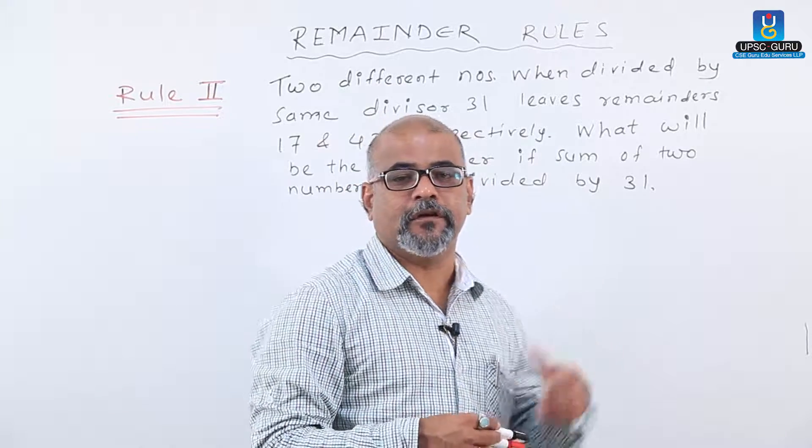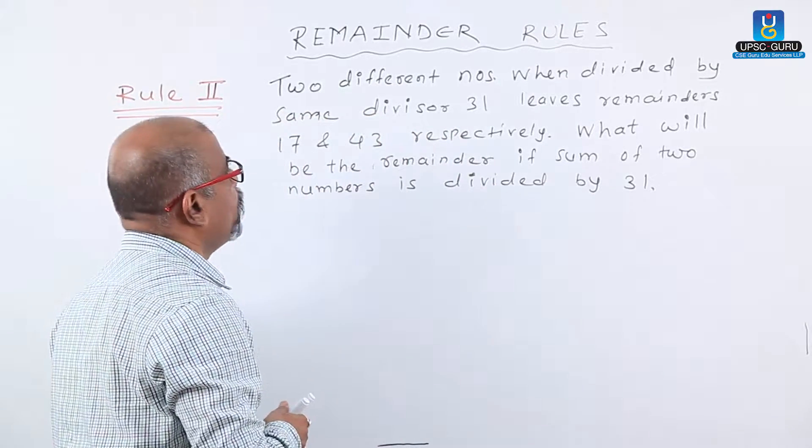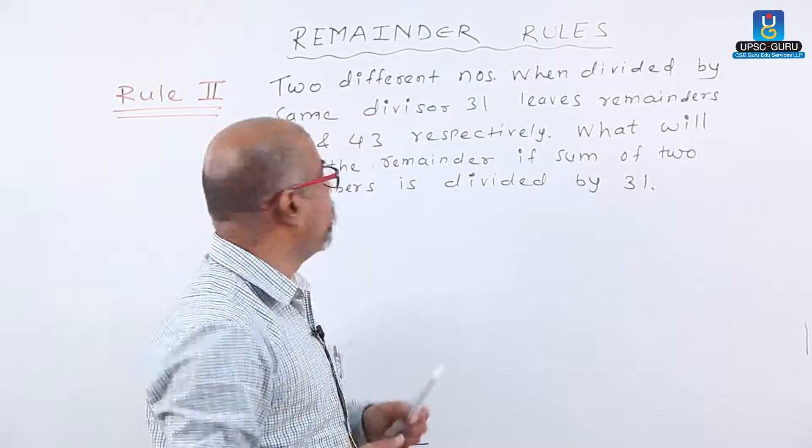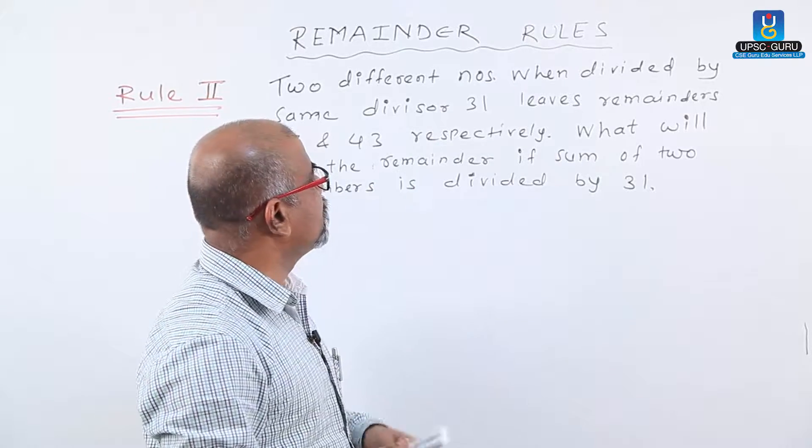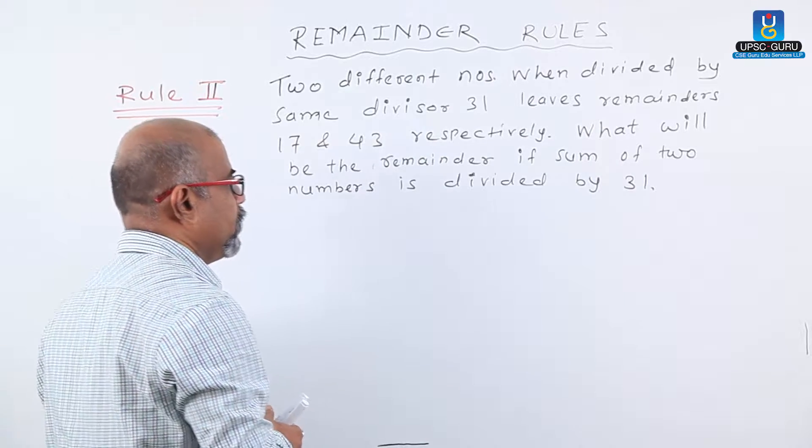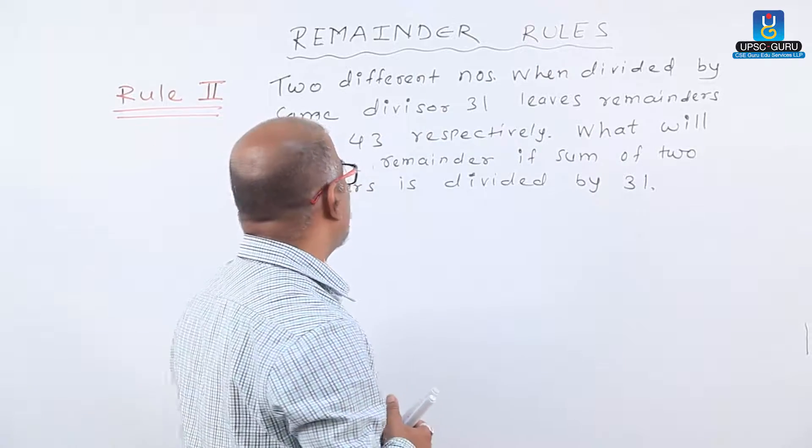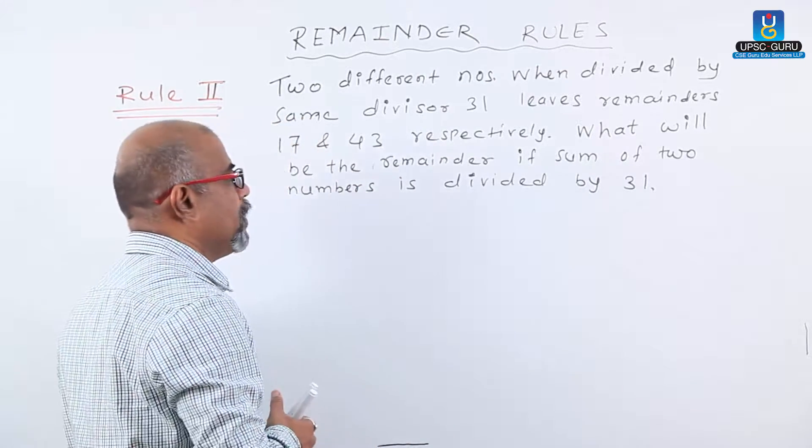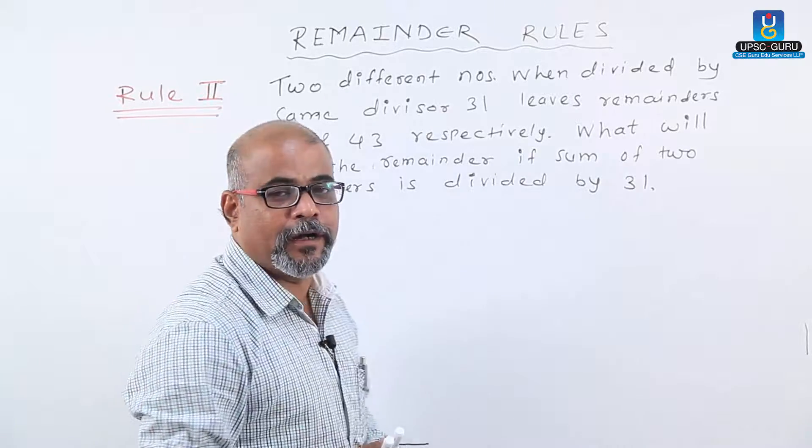Let us check one application of this rule. Two different numbers when divided by the same divisor 31 give us remainders 17 and 43 respectively. What will be the remainder if the sum of two numbers is divided by 31?